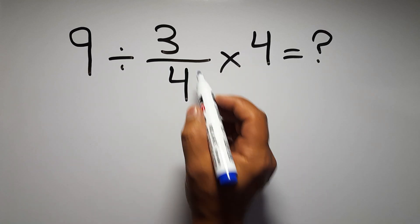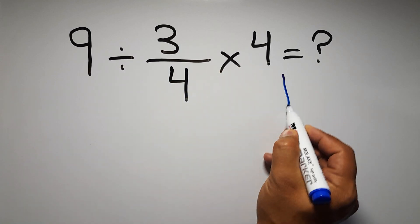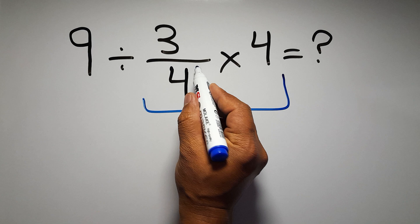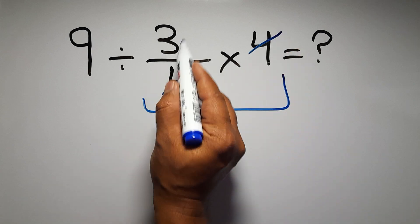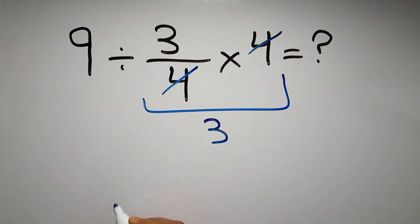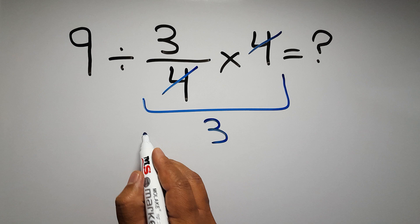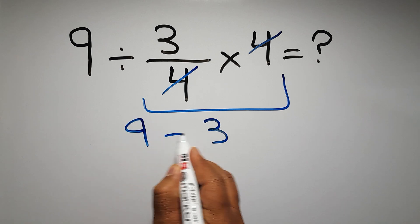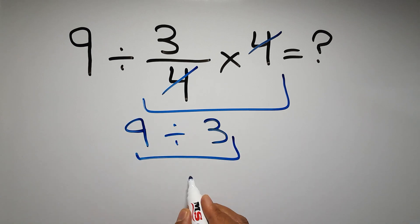First I do this multiplication: 3 over 4 times 4. We can easily cancel this 4 and this 4, so we have just 3. And the 9 divided by 3 gives us 3. But this answer is not correct.